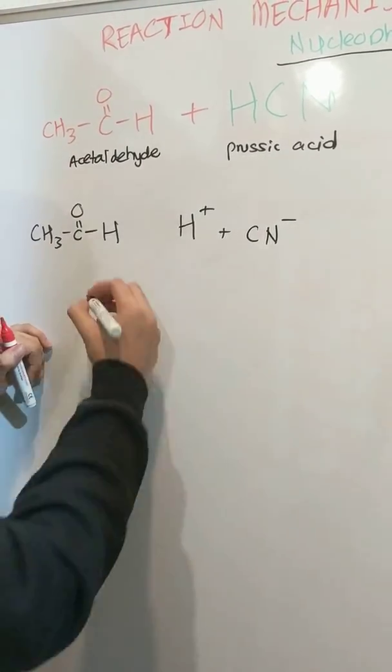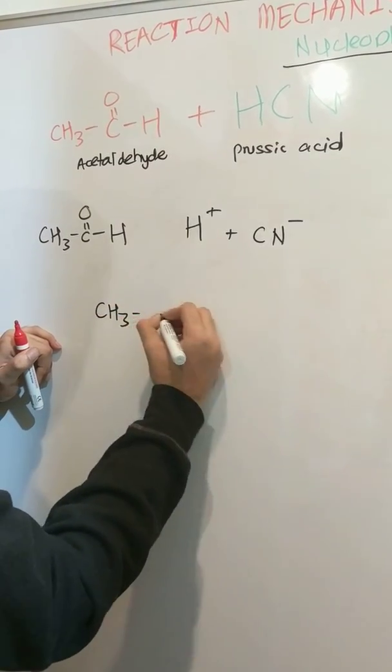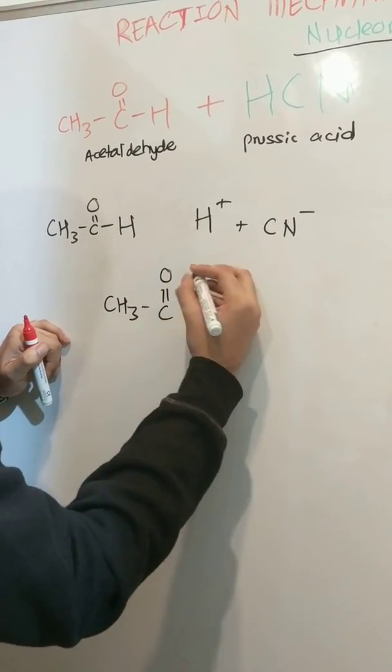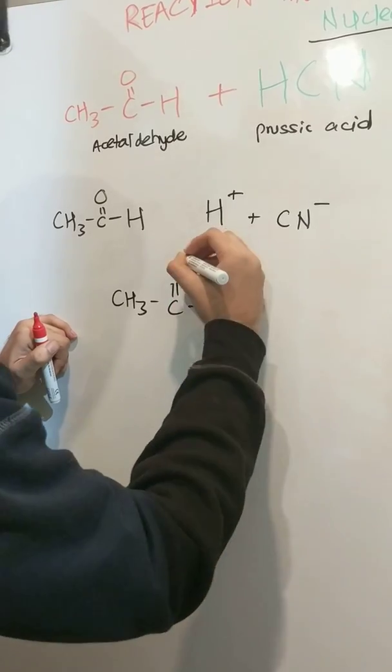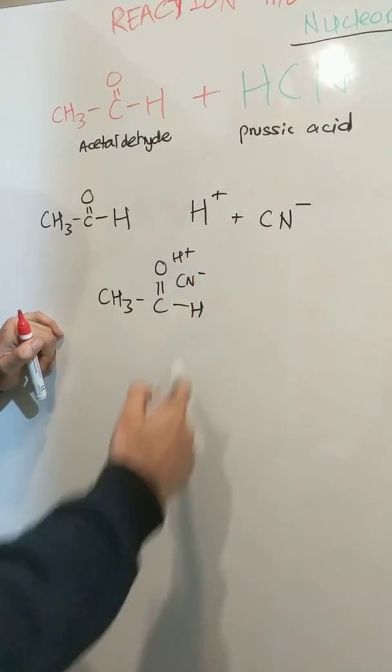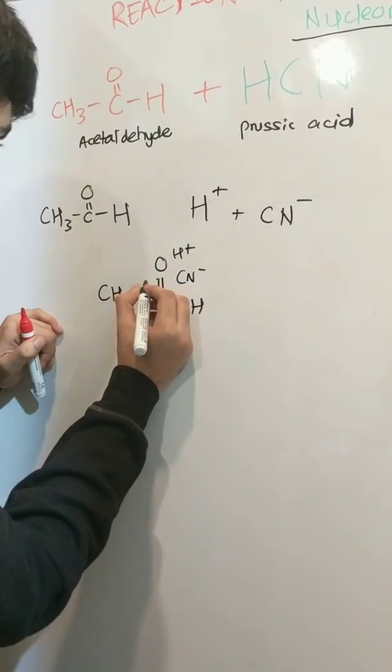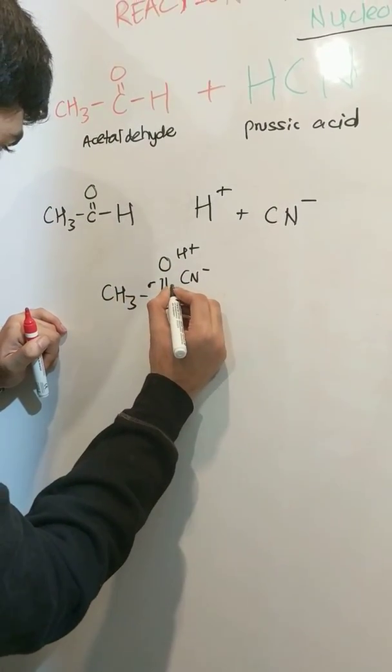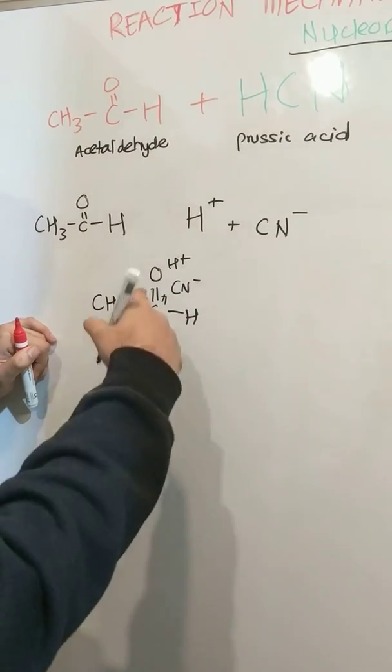And after that, like all addition reactions, these ions are going to migrate towards this double bond because addition reactions occur mostly there because double bonds have sigma and pi bonds.